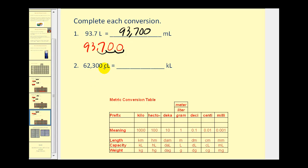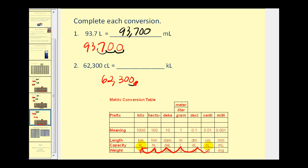In this last example, we're converting 62,300 centiliters to kiloliters — moving five columns to the left. So we move the decimal five places to the left. Starting with 62,300, moving the decimal five places left gives us 0.623 kiloliters.